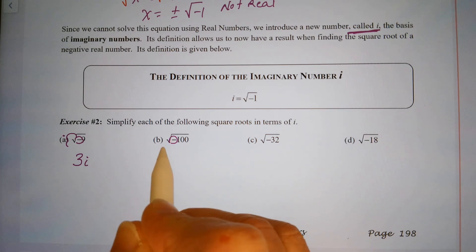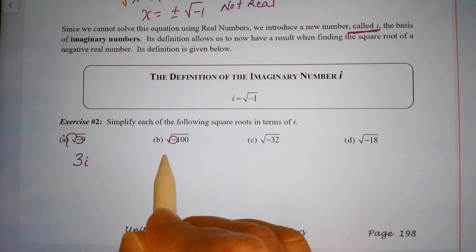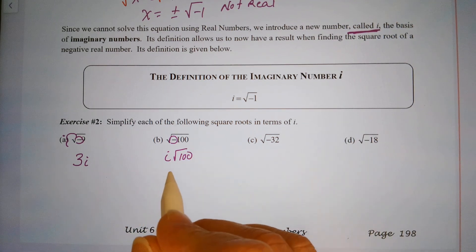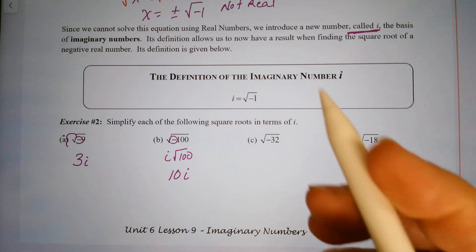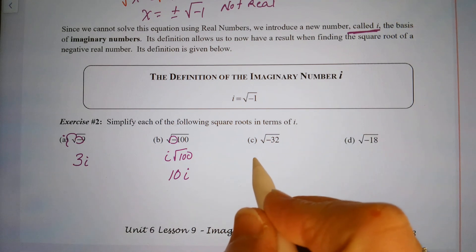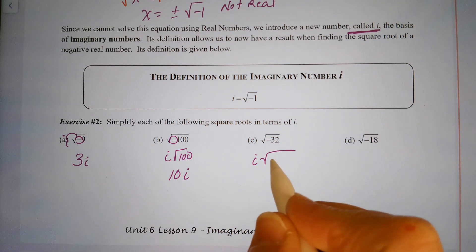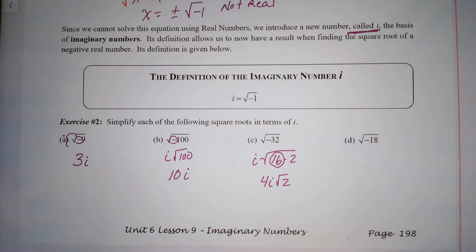For the square root of negative 100: the negative underneath the square root comes out as i, so we have i times the square root of 100, and the square root of 100 is 10, giving 10i. For the square root of negative 32: it comes out as i, and 32 is 16 times 2, the square root of 16 is 4, so the answer is 4i square root of 2.